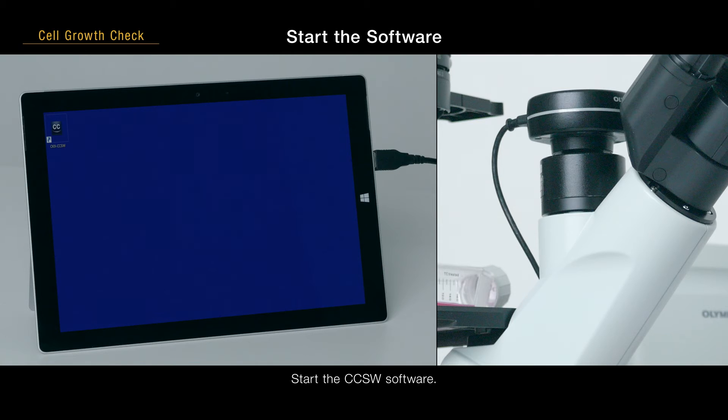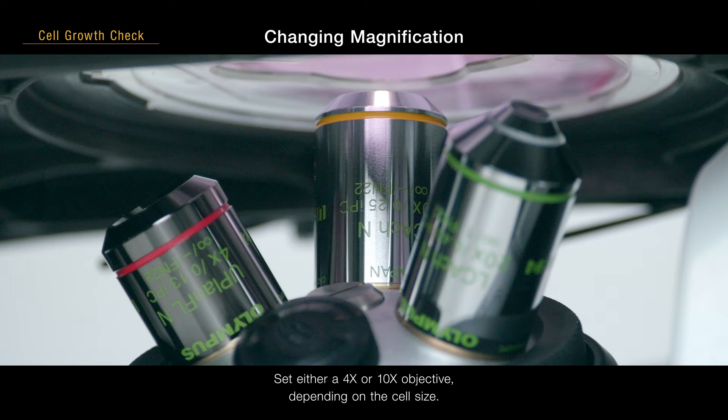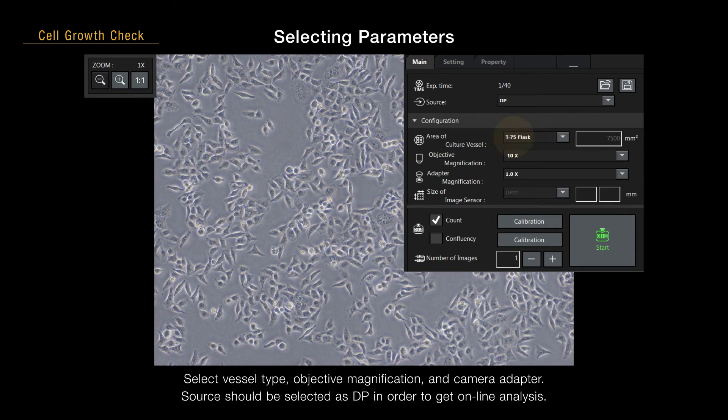Start the CCSW software. Set either a 4x or 10x objective, depending on the cell size. Select vessel type, objective magnification, and camera adapter.